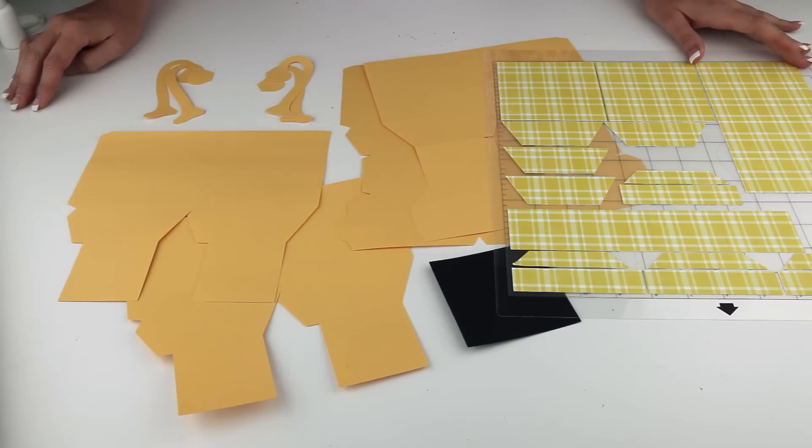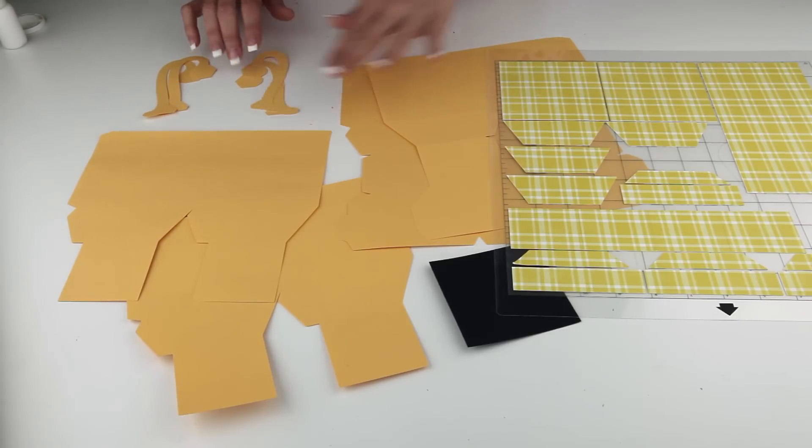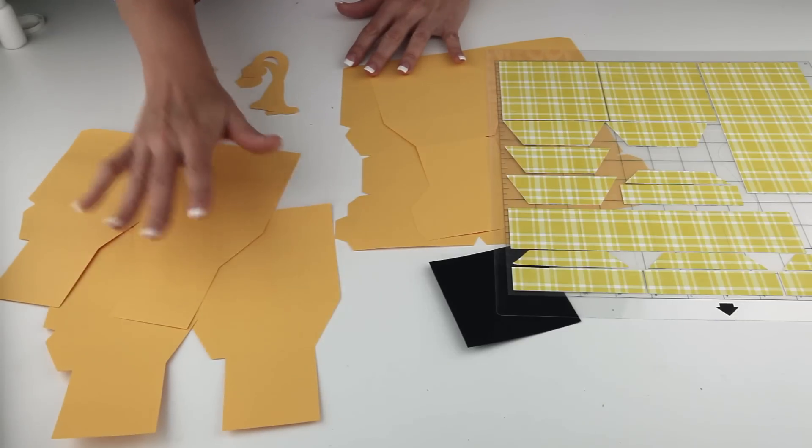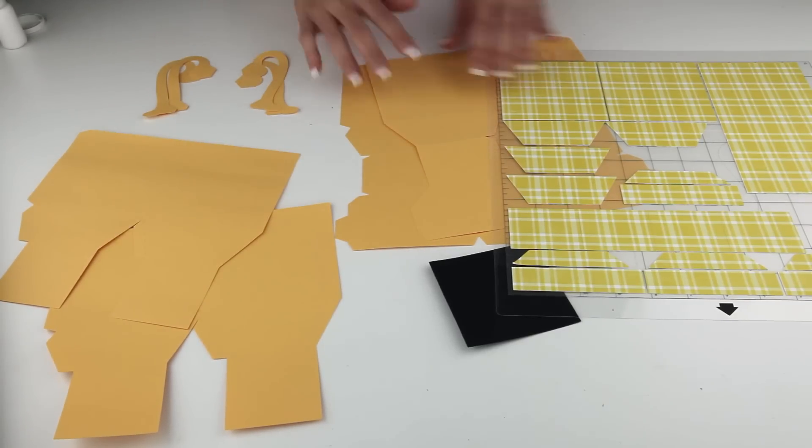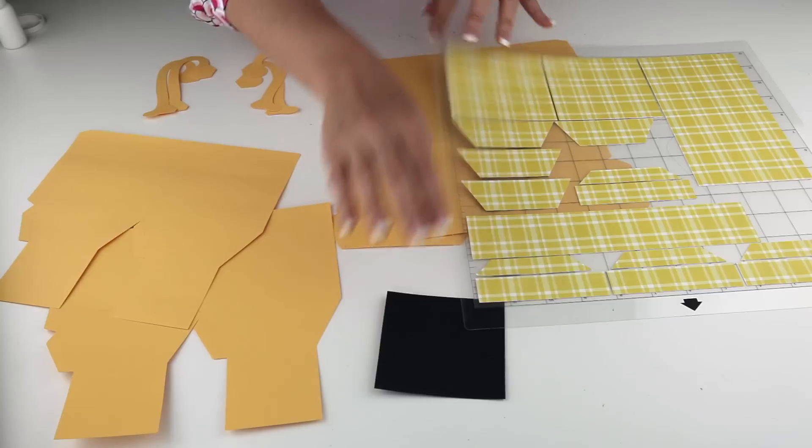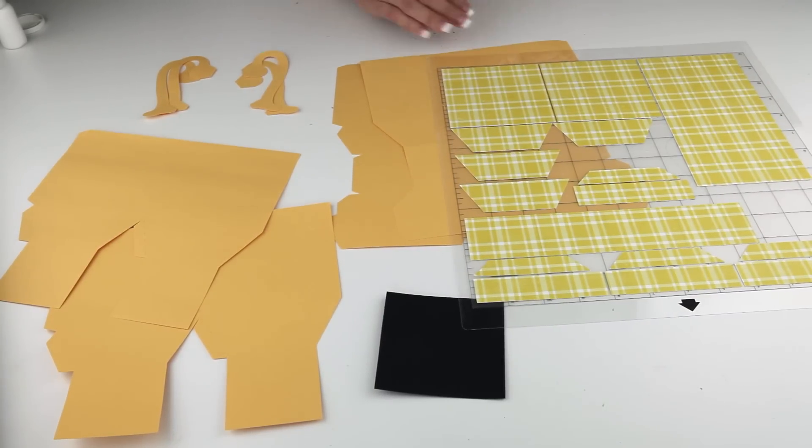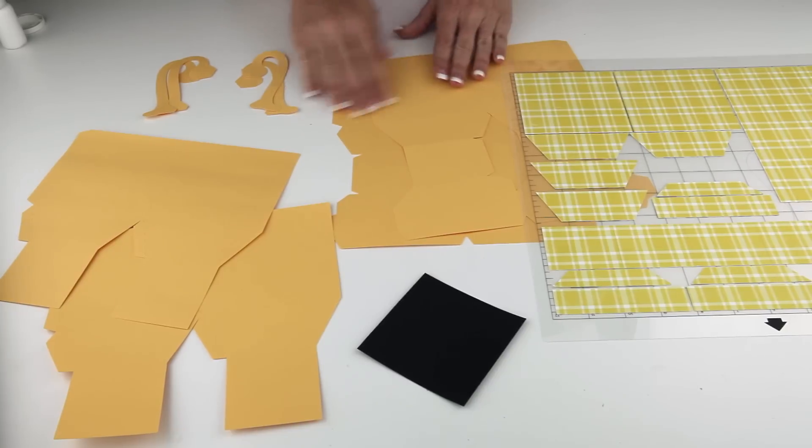Before I started assembling anything, I wanted to show you all the pieces as they are cut out. There are four little handle pieces and you will be gluing those to each other to make them more sturdy. There is a liner set with two pieces, the main box with two pieces, a little black piece to go behind the lettering, and all of these covering pieces to go on these two large pieces.